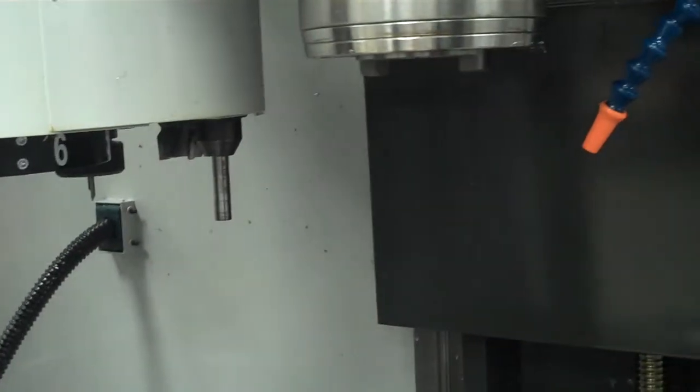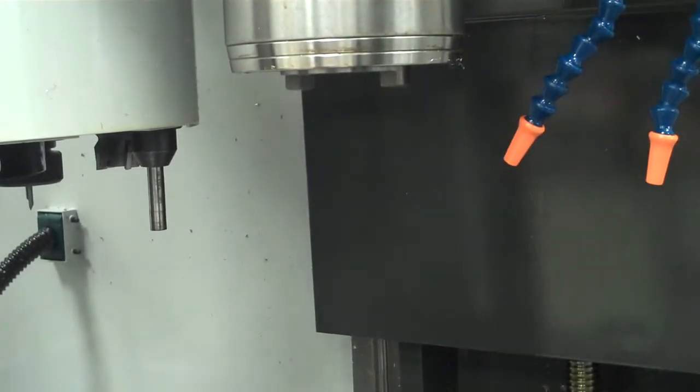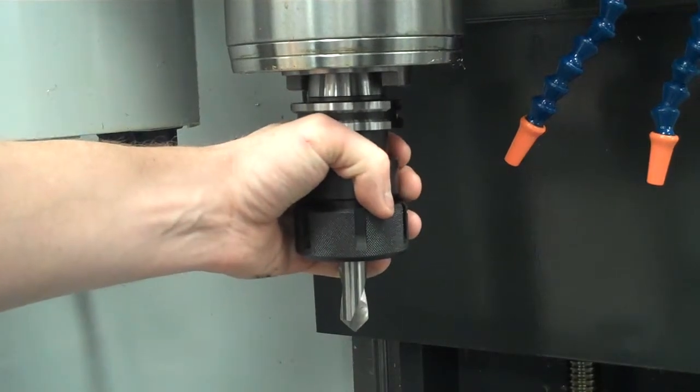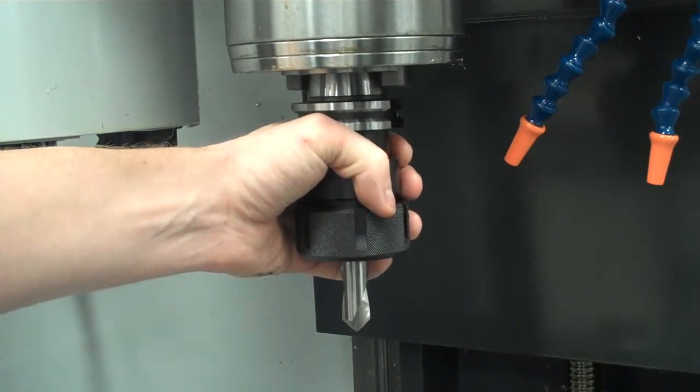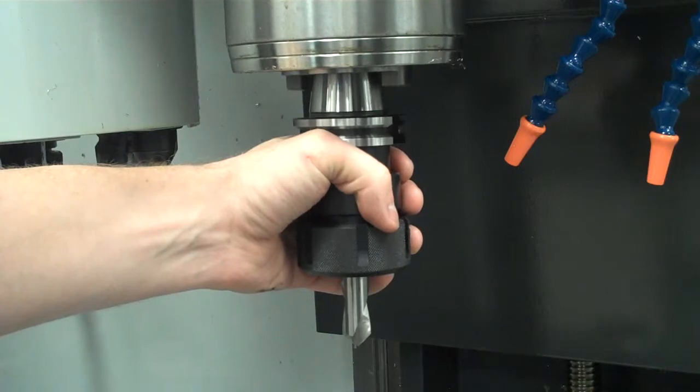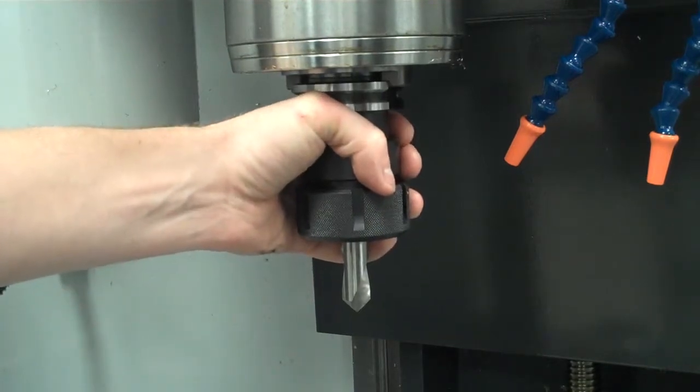Right now we're positioned right back at the spindle. I already cleaned it all off. I'm going to hold it right up into the spindle. I'm going to press and hold the tool release. You can hear it kind of pushing out. I push in and then I let go of the tool release, and now that tool is in there.